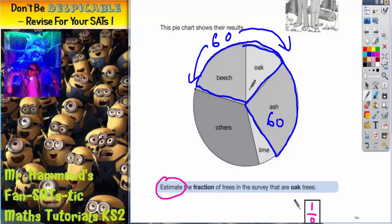But look at where the line for oak is. The line for oak seems to split these two. It seems to be half the size of beech. So if I put that line in there and then put another line in there I'm actually splitting this section into three sections.